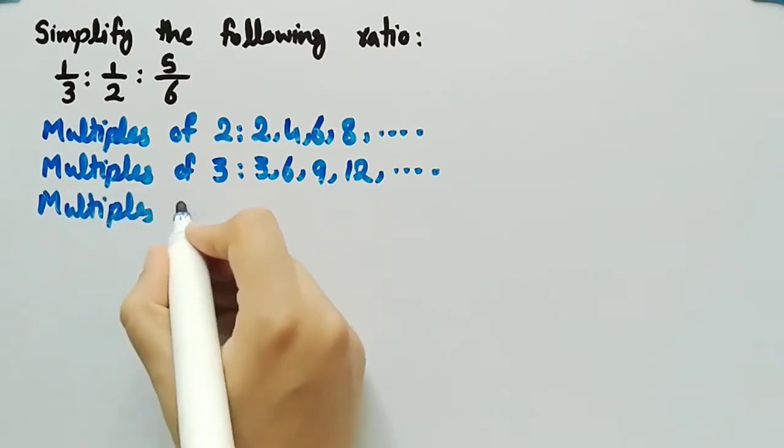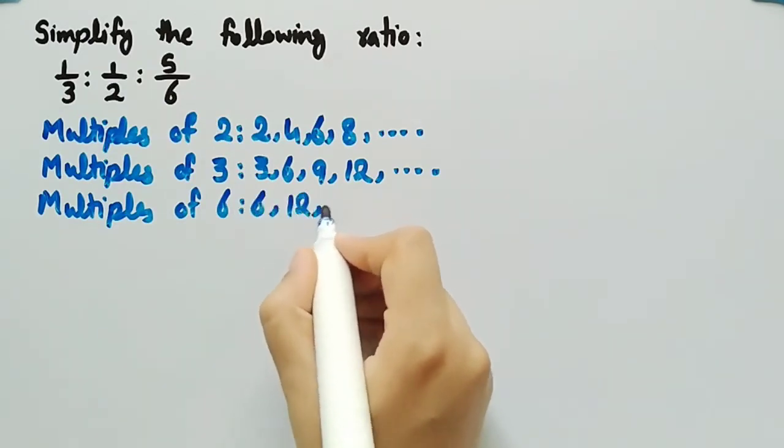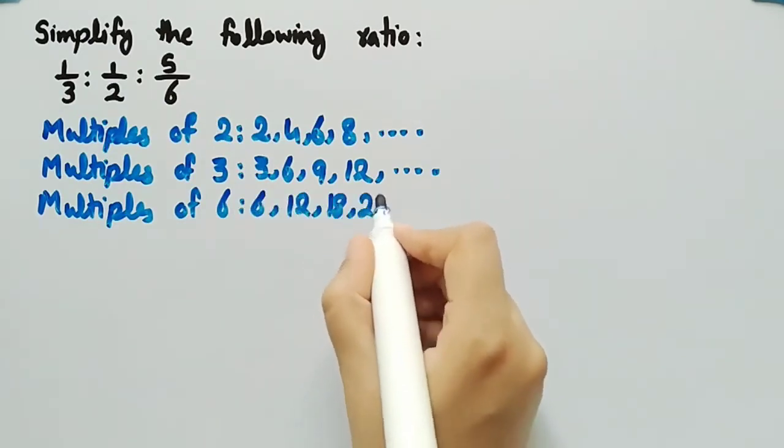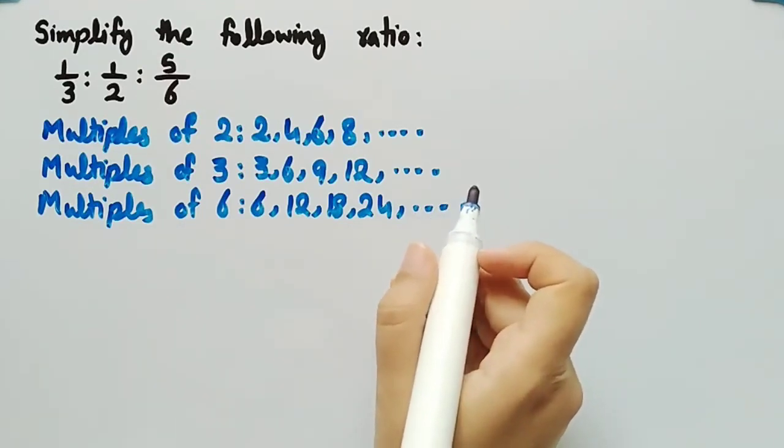Now let's write the multiples of 6 that are 6, 12, 18, 24, and so on.